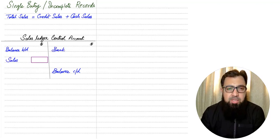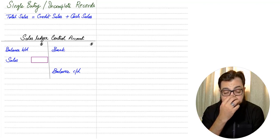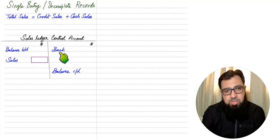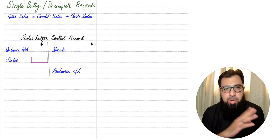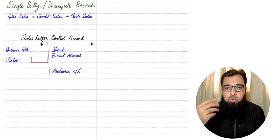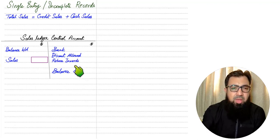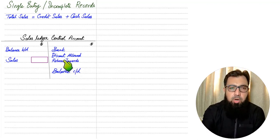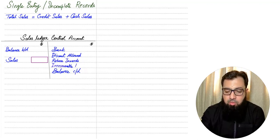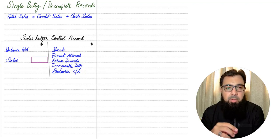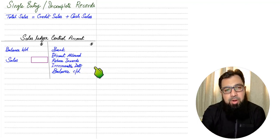Then we have bank — the amount received from customers. In a single entry question, a cash book is given from which you can extract how much money has been received from customers in the accounting period. Whenever we receive money from customers this reduces our debtors account: bank is debited and the debtor account is credited. Whenever we allow discount to customers for paying early, that is discount allowed, it also reduces our debtors balance. If customers return faulty goods — return inward or sales return — that also reduces the debtor balance. Irrecoverable debt, also known as bad debt, likewise reduces our debtor balance.